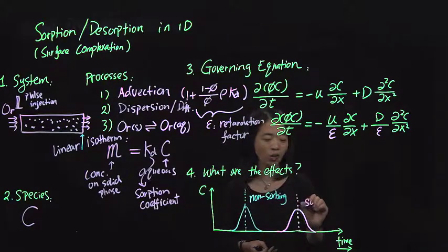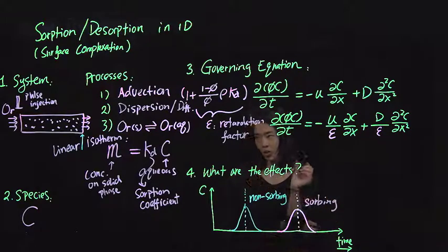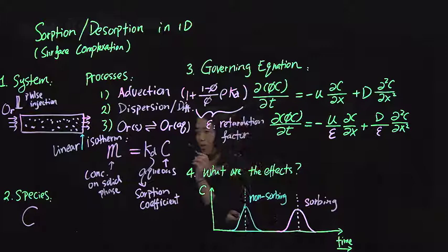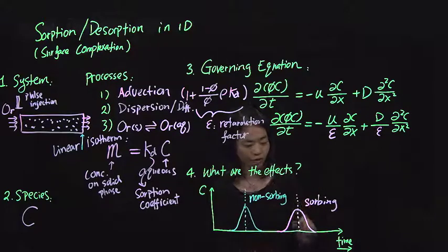So the sorbing species will spend some time to interact with the solid phase so that delays the whole process of flushing out.